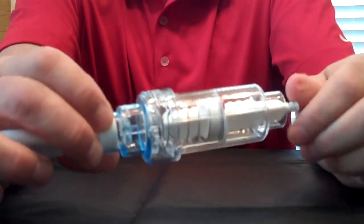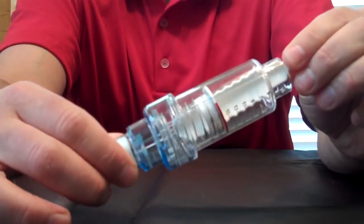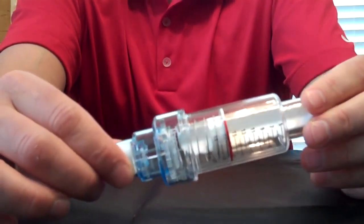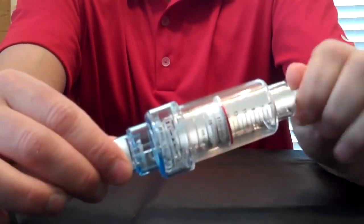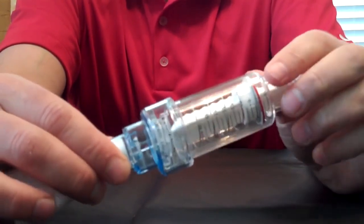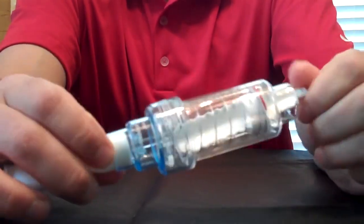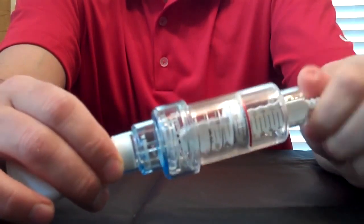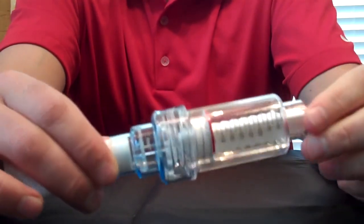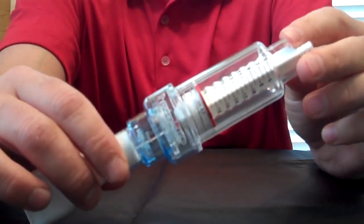So to recap, the PEP therapy, it's the lower pressures from five centimeters on up, deep breaths in, slow deep breaths out. Crank it up all the way for the FET technique. You're going to take a deep breath in and blast it out. And that will produce a cough. If you have secretions, it will make you cough. That's it. Thank you.